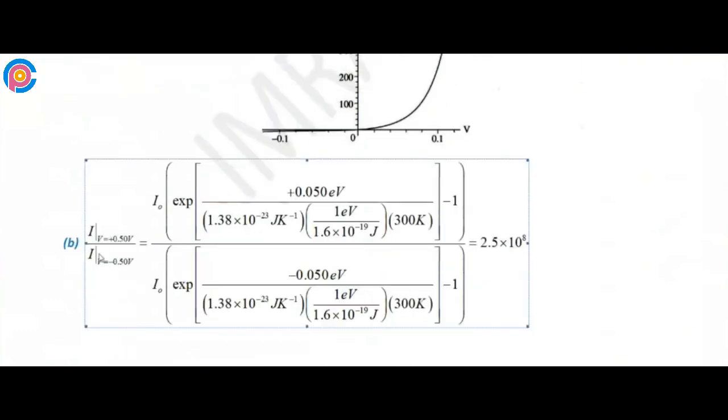We know the ratio for forward bias with plus voltage versus reverse with negative voltage. We can calculate the ratio, and the result is approximately 2.5 times 10^8. So this is our solution.